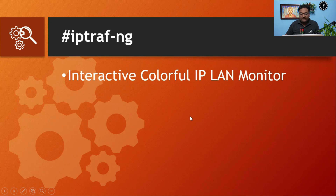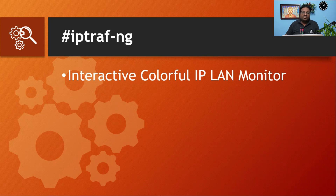The next command is iptraf-ng, used for interactive, colorful IP LAN monitoring. This command is not available by default in most Linux distributions — you need to explicitly install it by configuring your repository. I have separate videos on how to configure the yum/dnf repository and how to register with the Red Hat network.